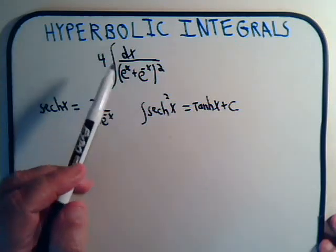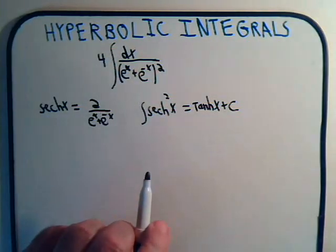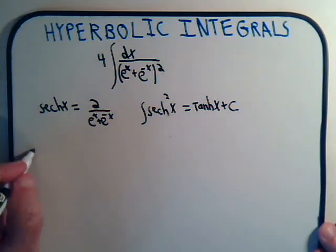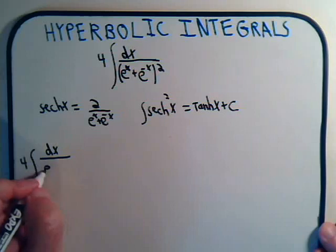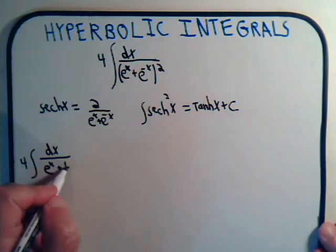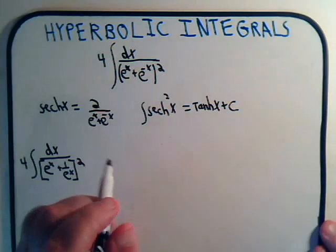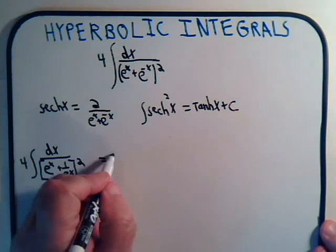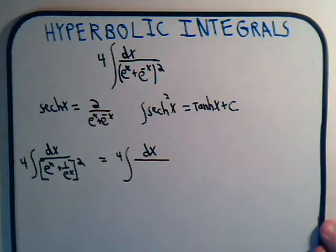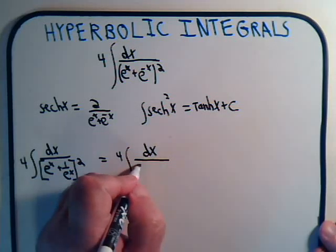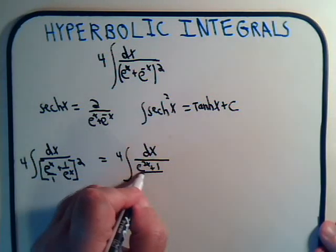But suppose we look at this and we didn't make that association, and we just sort of plowed in and wanted to see what we could do to solve this integral. So we have 4 times dx divided by e to the x plus 1 over e to the x, all squared. That would equal 4 times the integral of dx, and this would be e to the 2x plus 1 divided by e to the x.